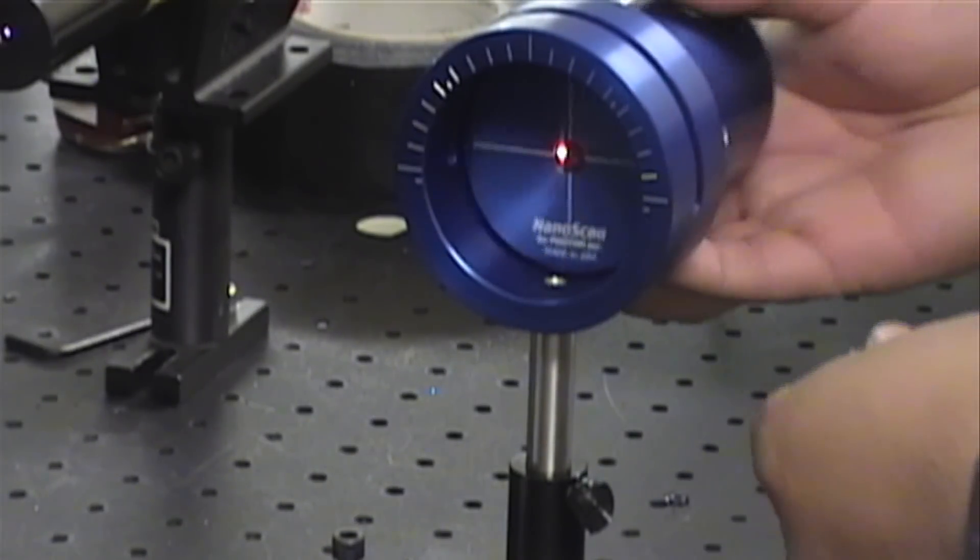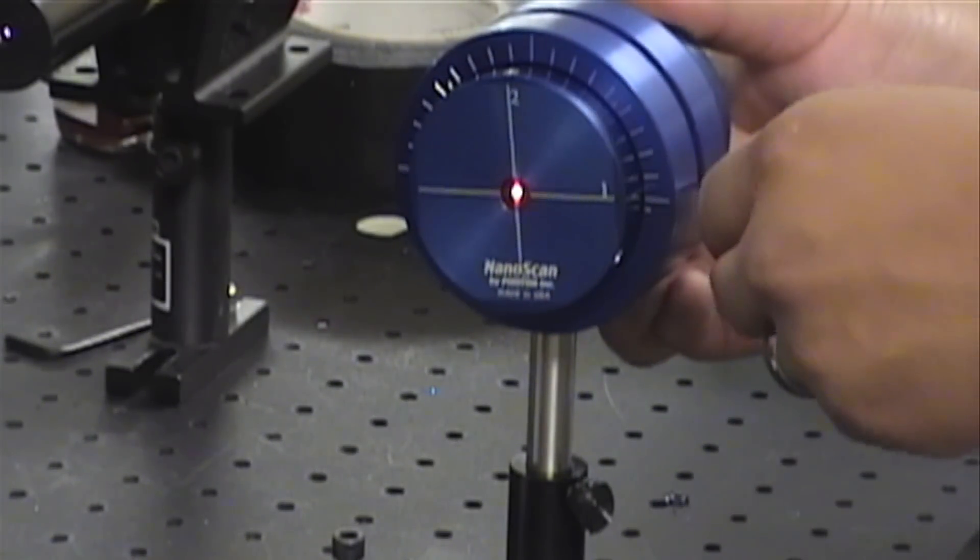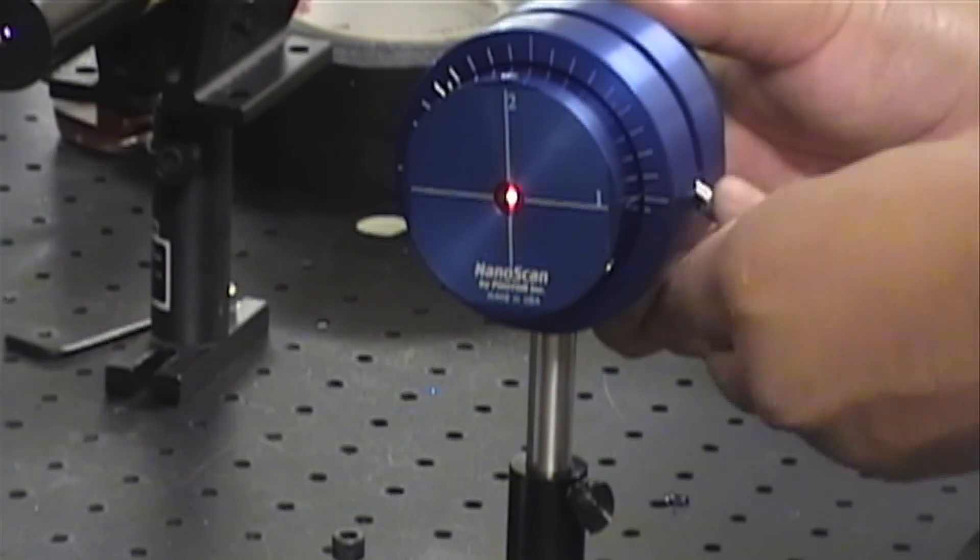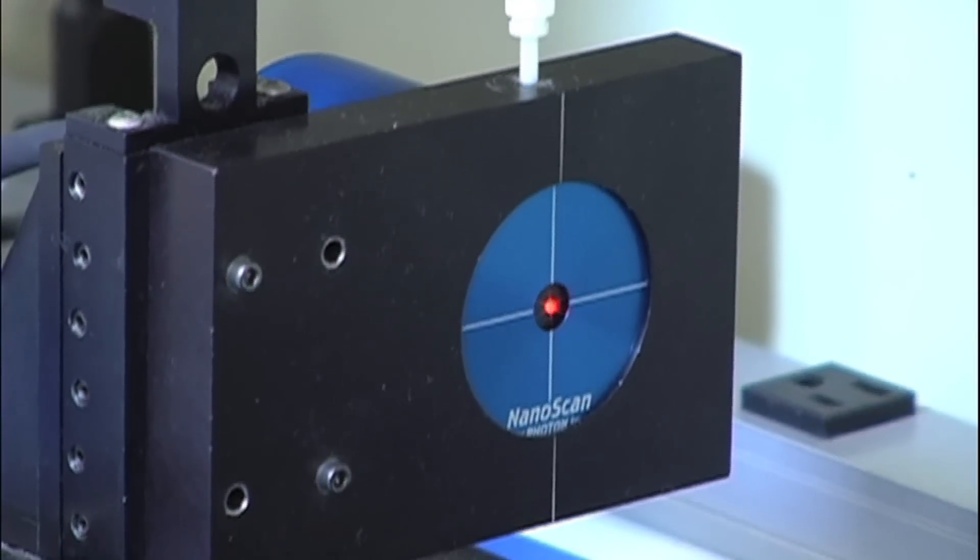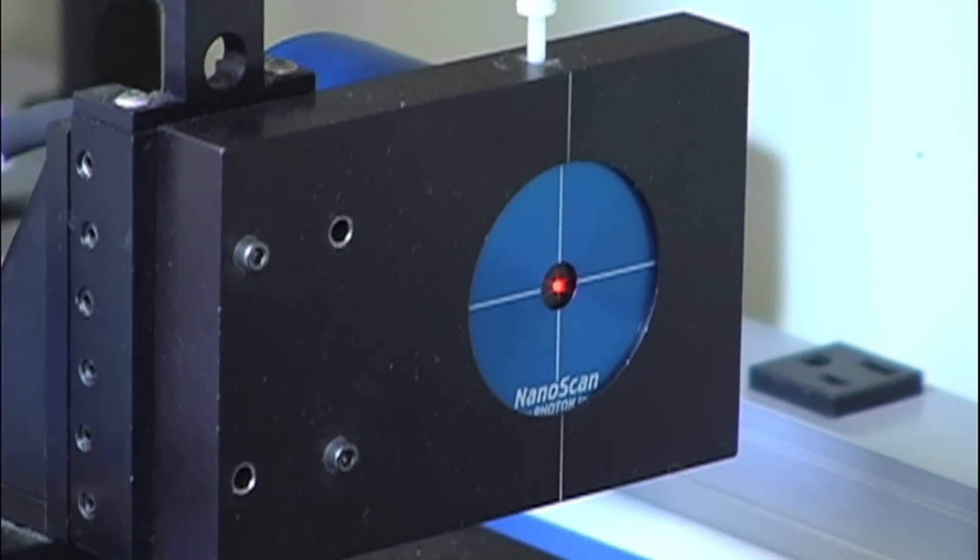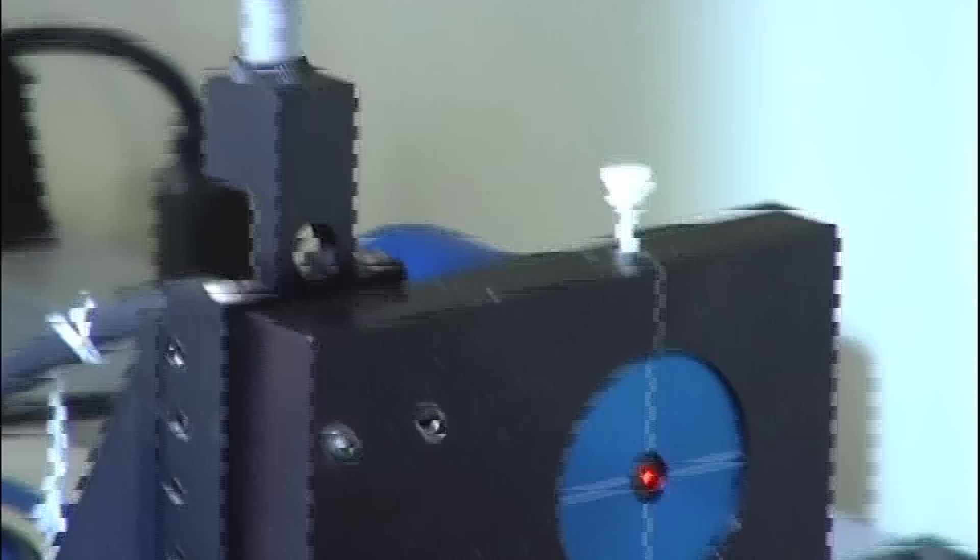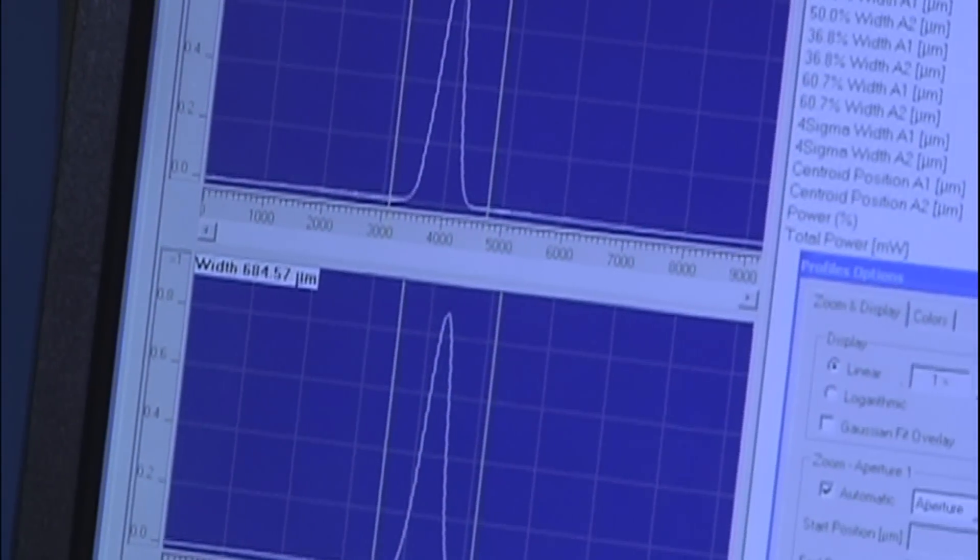Photon's scanning slit profilers provide a simple method that works well for both CW and multi kilohertz and above pulsed lasers. The profiler is placed in line with the laser beam and measures focused beams with little or no attenuation.